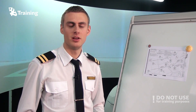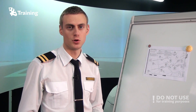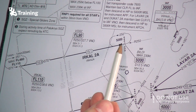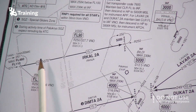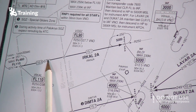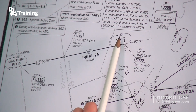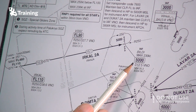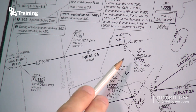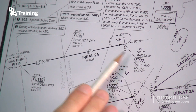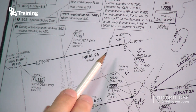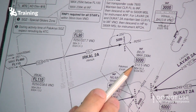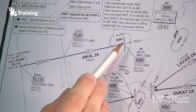Where can we find holdings? If it's published, you will find them on an approach chart. I will use this chart as an example — we will use the Bildi holding. As we can see, the inbound course will be 070 degrees, the outbound will be 250 degrees. We have a maximum speed of 230 knots, and we have to fly this holding above 5,000 feet. This fix is on a radial from Victor November Alfa Oscar VOR, and it's 12.5 nautical miles from the VOR.